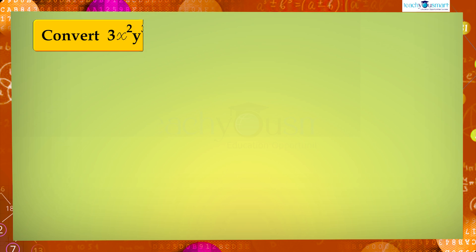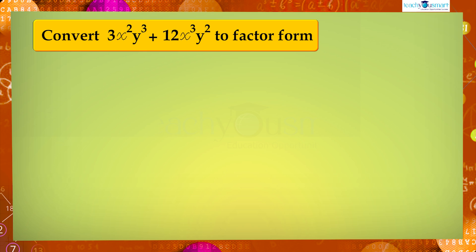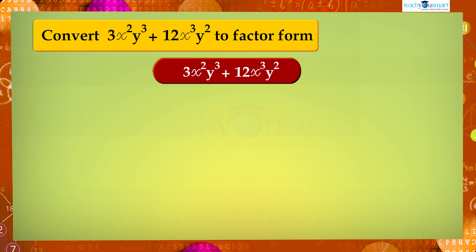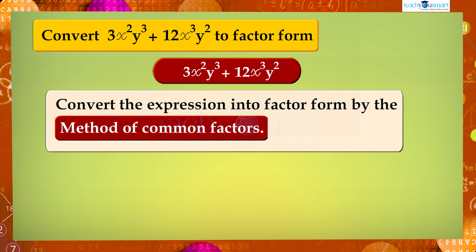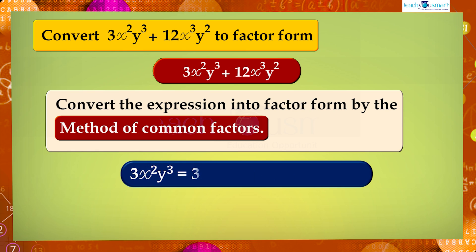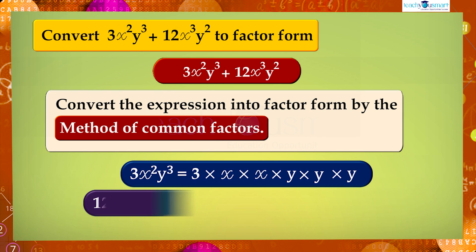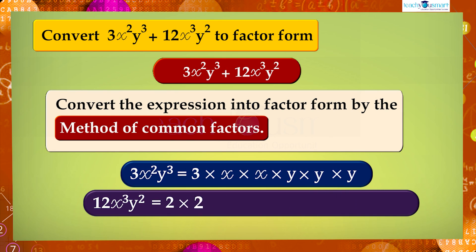Let's see another example: convert 3x²y³ + 12x³y² to factor form. The given expression is 3x²y³ + 12x³y². We can convert this expression into factor form by the method of common factors. We can write 3x²y³ as 3·x·x·y·y·y, and 12x³y² equals 2·2·3·x·x·x·y·y.